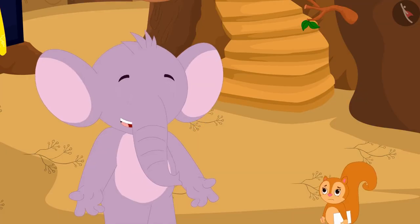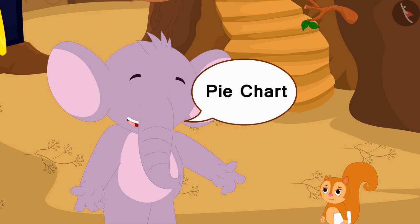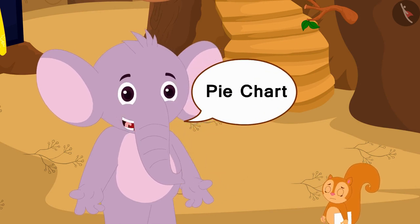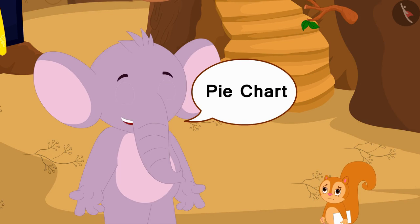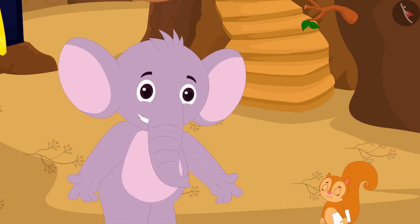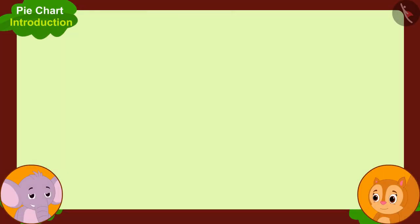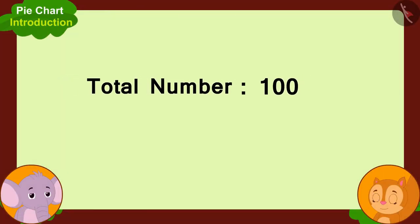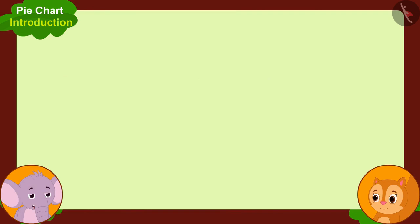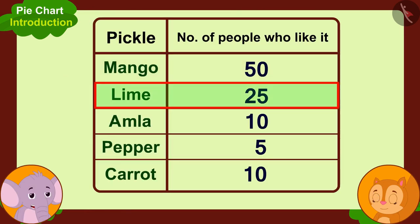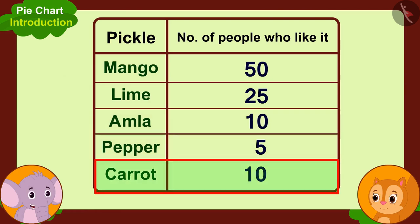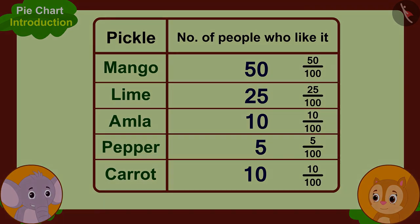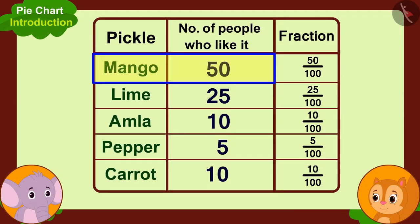Appu explains that through the pie chart they can illustrate information in a simple way by making a circle. He says, 'Let me teach you how to make it. We have got information of a hundred people in total. To make a pie chart, we will first write the number of people who like each pickle as a fraction of hundred. For example, 50 people like mango pickle, so we take that as 50 over 100, or half.'